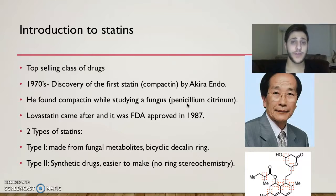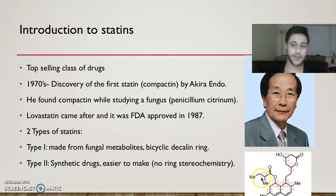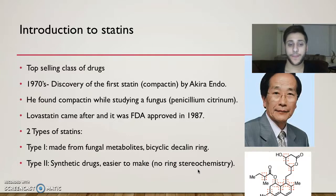There are two types of statins. Type 1 statins are made from fungal metabolites and resemble the natural product. They are known for their bicyclic decalin ring — notice the stereochemistry, as all of these are stereogenic centers. Type 2 statins are synthetic drugs. Although they have a larger structure, Crestor is actually a type 2 statin. They are easier to make because there is no ring stereochemistry — they don't have the stereochemistry found in type 1 statins.